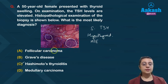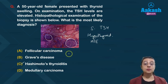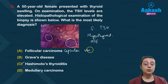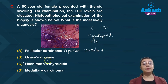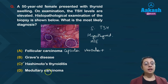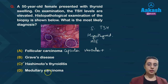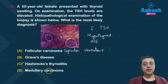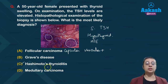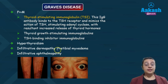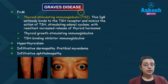In follicular carcinoma, you see abundant micro-follicles with vascular and capsular invasion — features that differentiate it from follicular adenoma. In Graves disease, you see hyperplastic follicles with papillary infoldings and scalloping of colloid. Medullary carcinoma shows disrupted follicles with spindle cells and lymphocytes. In Hashimoto's: atrophy, lymphoplasmacytic infiltrate, and oncocytic metaplasia.